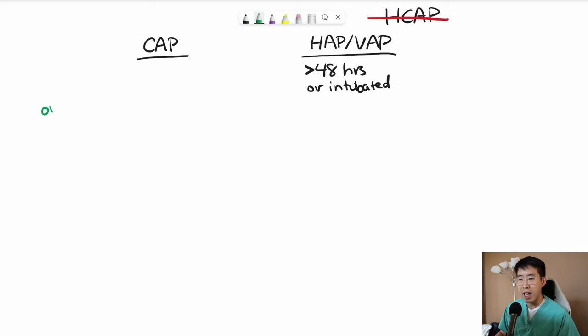The first one that we start with is outpatient treatment. So if somebody caught pneumonia but they don't need to be hospitalized, then we take a look at whether they are completely healthy or if they have major medical comorbidities.